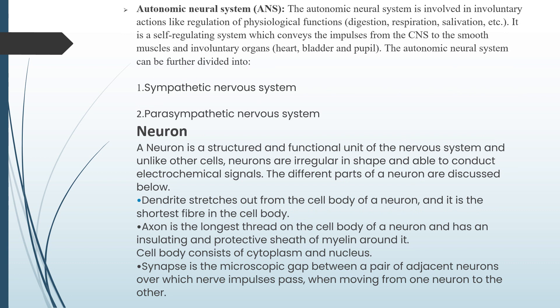Autonomic neural system is involved in involuntary actions like regulation of physiological functions — that is digestion, respiration, salivation, etc. It is a self-regulating system which conveys the impulses from CNS to the smooth muscles and involuntary organs, heart, bladder and pupil. The autonomic neural system can be further divided into sympathetic nervous system and parasympathetic nervous system.